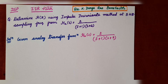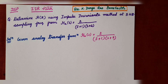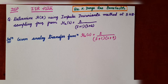What you will be understanding in this class is how to find H(z) using the impulse invariance method. Finding H(z) means determining the transfer function of a digital filter. What is given to you in this problem is the transfer function of an analog filter, and you are finding the transfer function of a digital IIR filter.